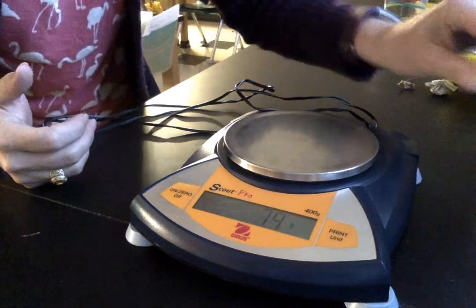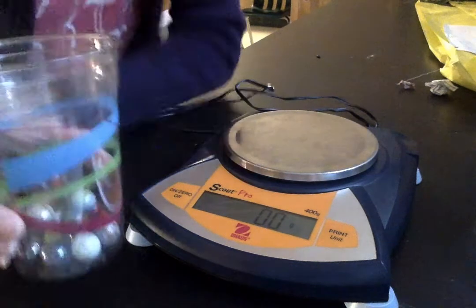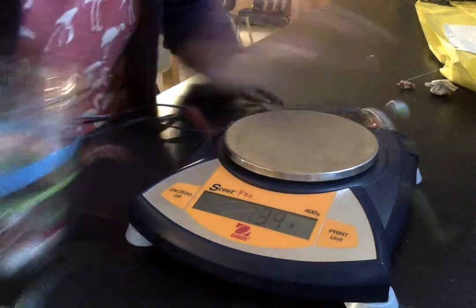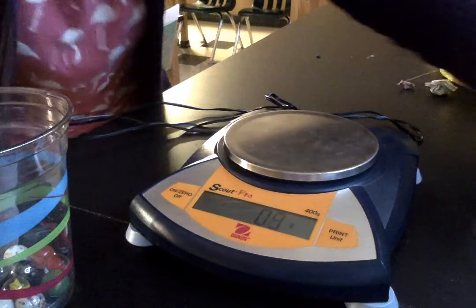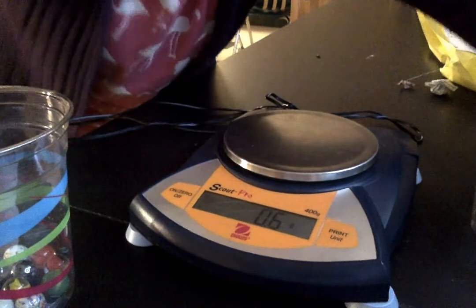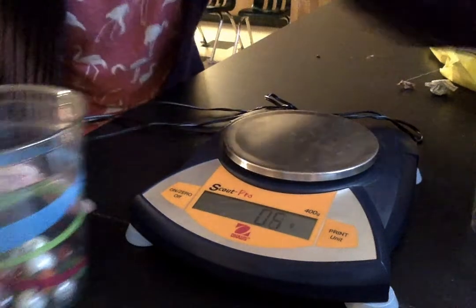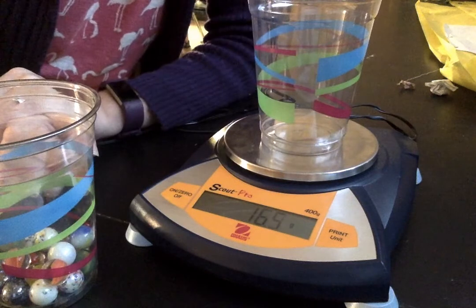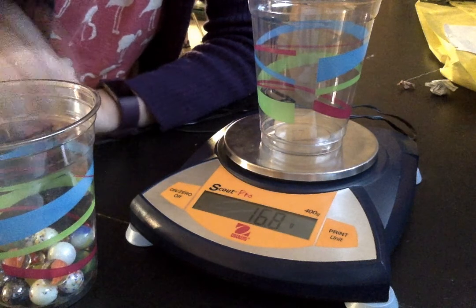However, let's say that I want to get the mass of a bunch of marbles. If I were to put them on, you can see they just roll around. So to get the mass of these marbles, first you put the cup, or a container, onto the balance.